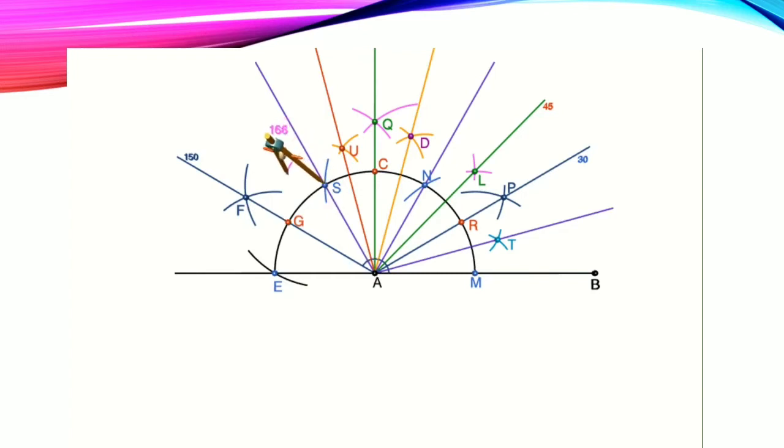We will bisect the angle between 120 degrees and 150 degrees. This angle is equal to 135 degrees. And then we are bisecting the angle between 150 degrees and 180 degrees, and we are getting 165 degrees.